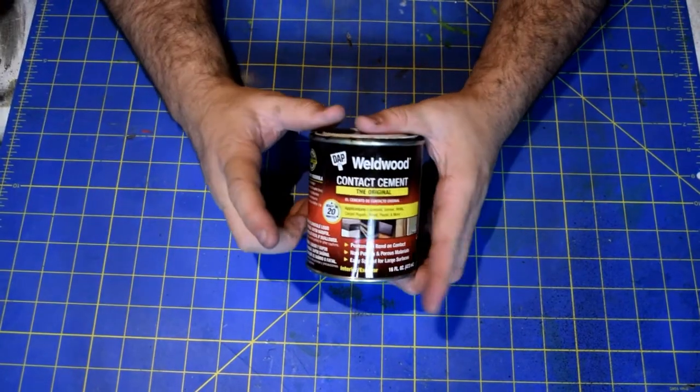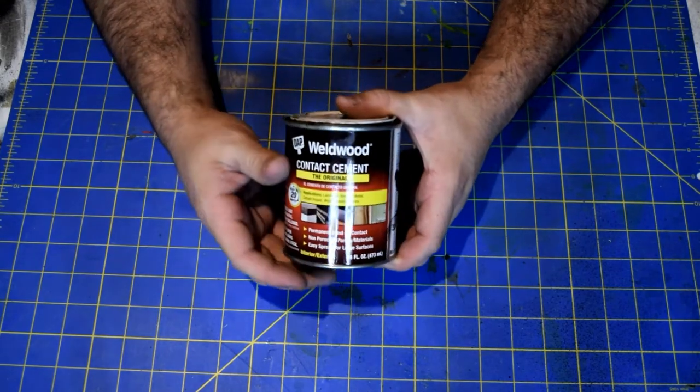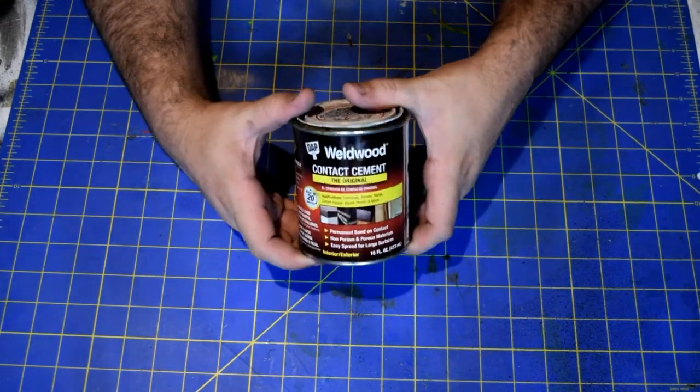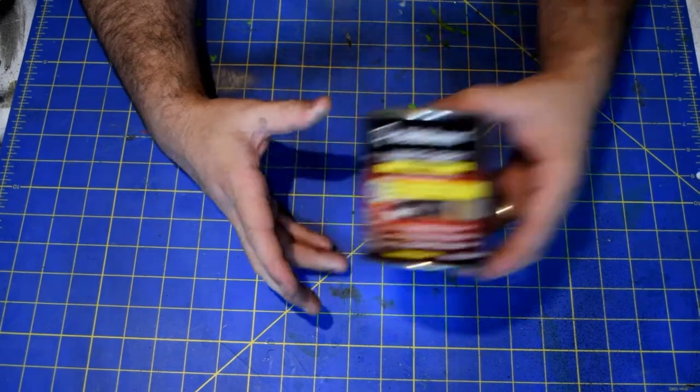And last but not least you're going to need your glue and your contact cement that you're going to put in there. This you can find at your local Walmart or any hardware store. It's a pretty cheap little can and I recommend that you use this to fill up your glue pot.